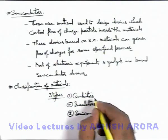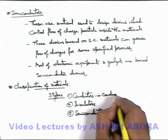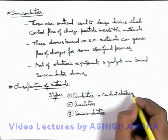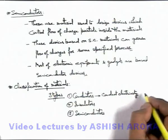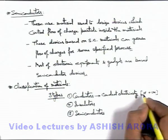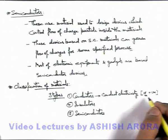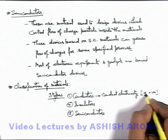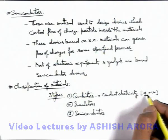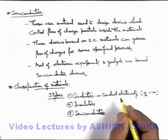The basic difference in the three: conductors are those which conduct electricity. Almost all metals fall under the category of conductors. For conductors, their alpha is positive — alpha is the temperature coefficient of resistance, which we already studied in the section of current electricity. This says that if alpha is positive, that means with the temperature, the resistance or resistivity of a conductor increases and its conductivity decreases.